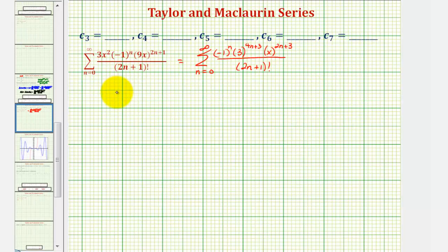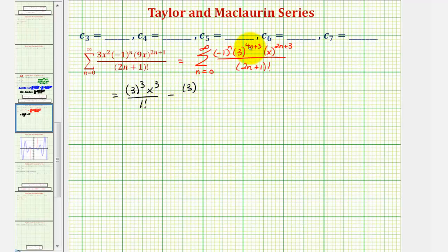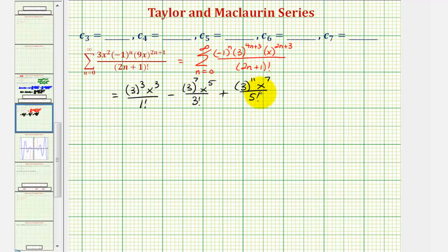Now we'll generate the first several terms to find c₃ through c₇. When n is 0, we have negative 1 to the 0 — that's 1 — times 3 cubed, times x cubed, divided by 1 factorial. When n is 1, the term is negative: minus 3 to the 7th power, times x to the 5th, divided by 3 factorial. When n is 2, the term is positive: plus 3 to the 11th, times x to the 7th, divided by 5 factorial. These are the only three terms we need.